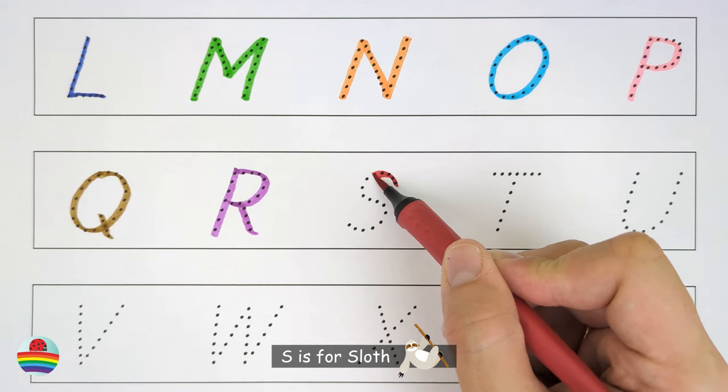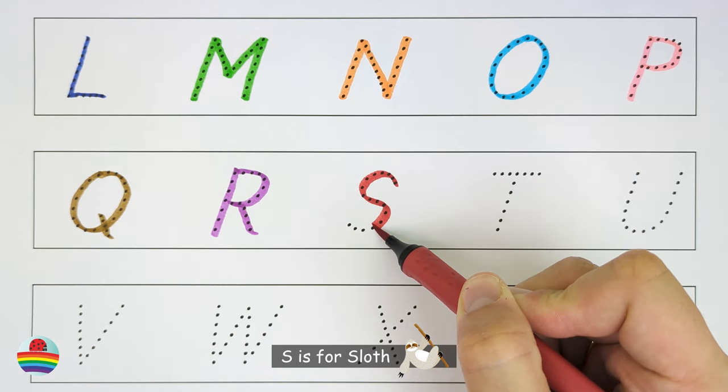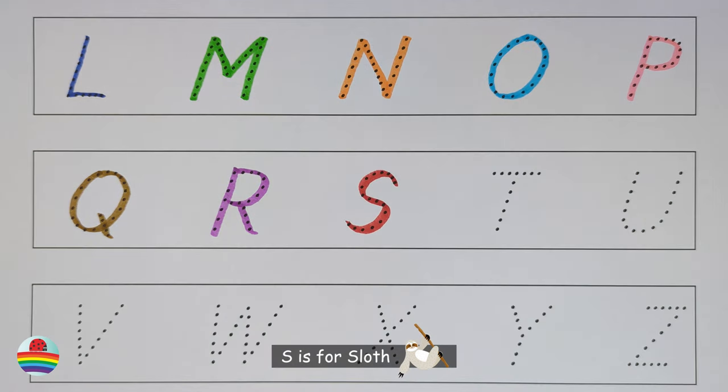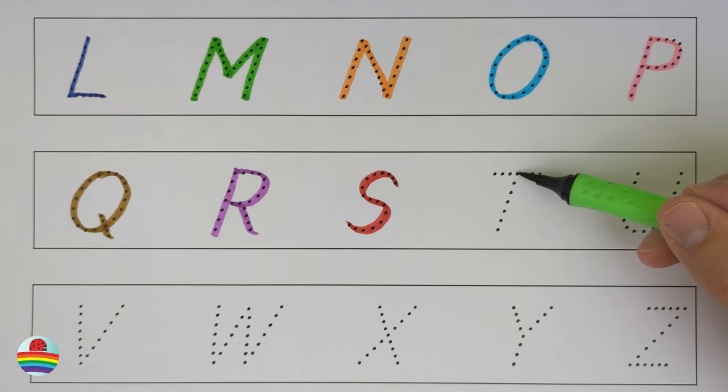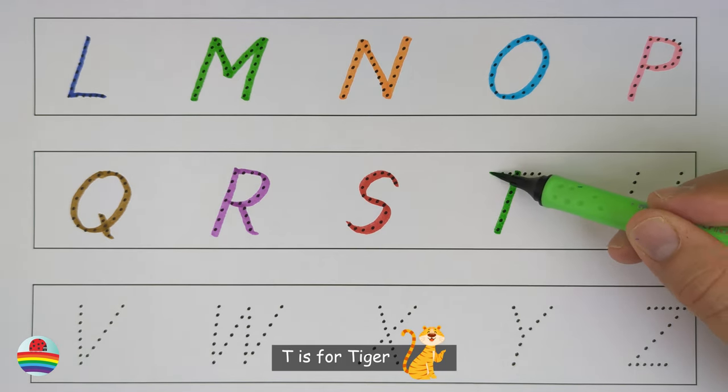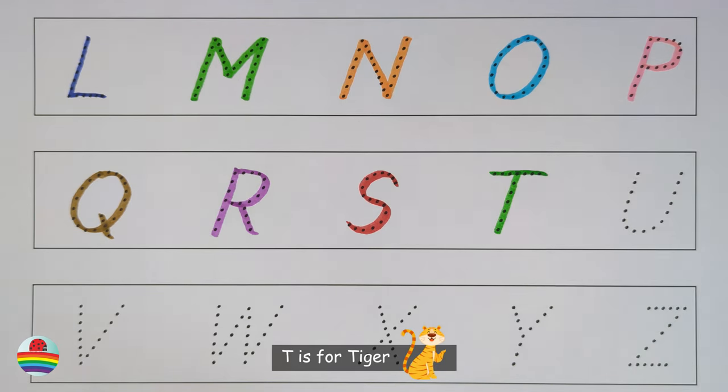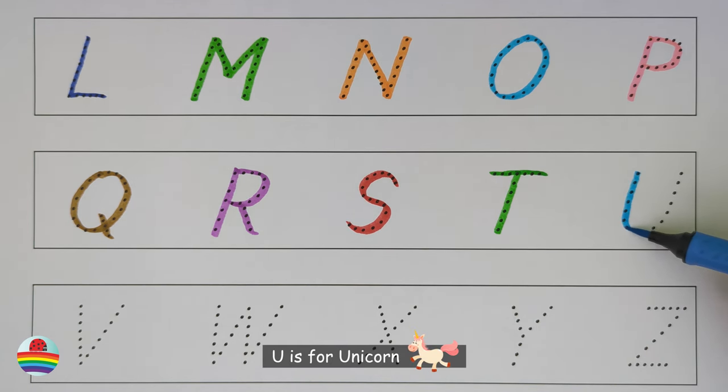S. S is for Sloth. S. T. T is for Tiger. T. U. U is for Unicorn. U.